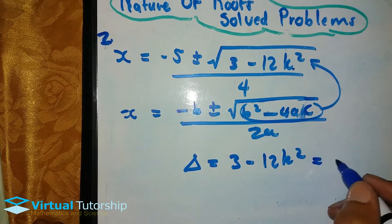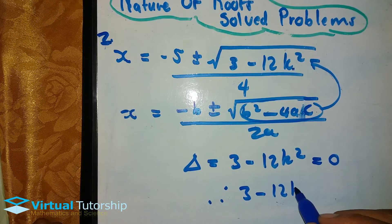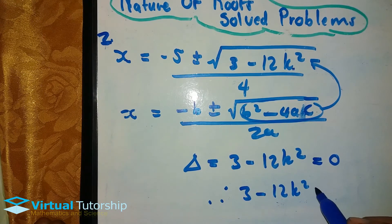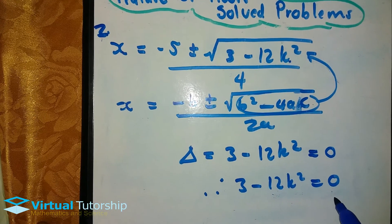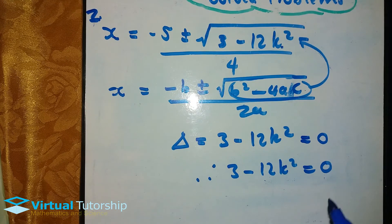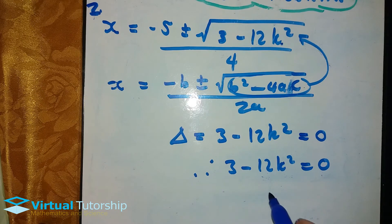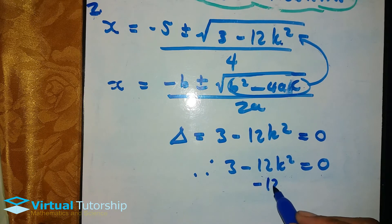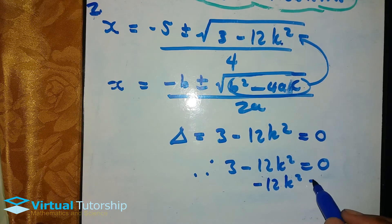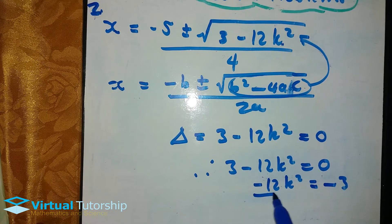The delta must be equal to zero. Therefore the equation is 3 minus 12k squared equal to zero. Now solve for k. This is a quadratic equation. Transpose the figures: negative 12k squared equals negative 3. Divide both sides by negative 12.